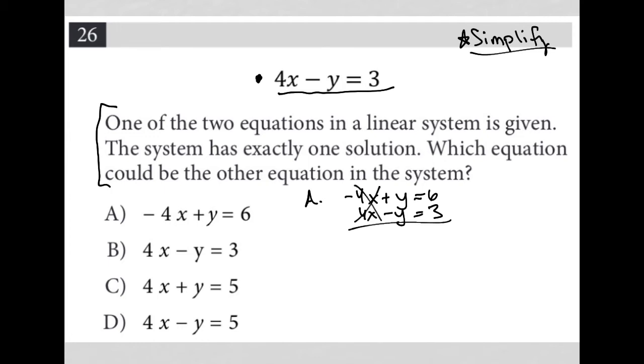But if you notice, the x would be gone and the y would be gone and I'd have 0 equals 9. And this is a no solution answer. So A is gone because we're looking for exactly one solution, not no solution.